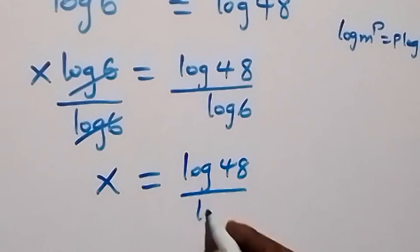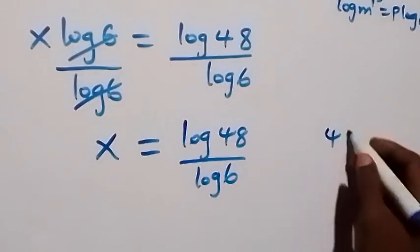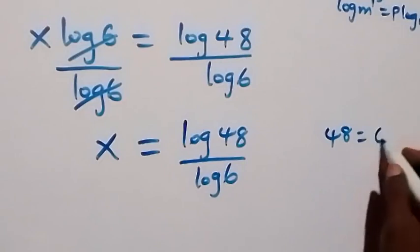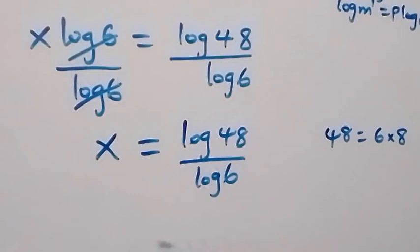From here we can simplify further because 48 can be written as 6 multiplied by 8.